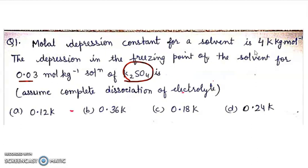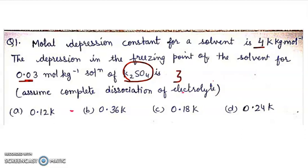So, Kf's value is 4, m's value is 0.03, i's value is 3. Now we will put values. So, the answer will be 0.36 Kelvin.